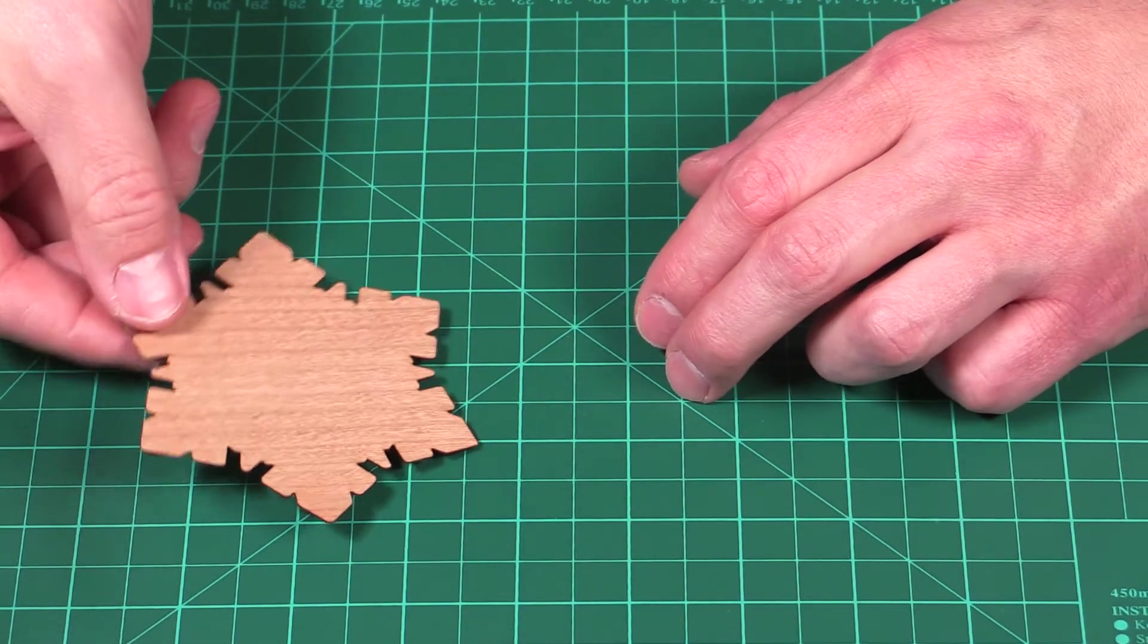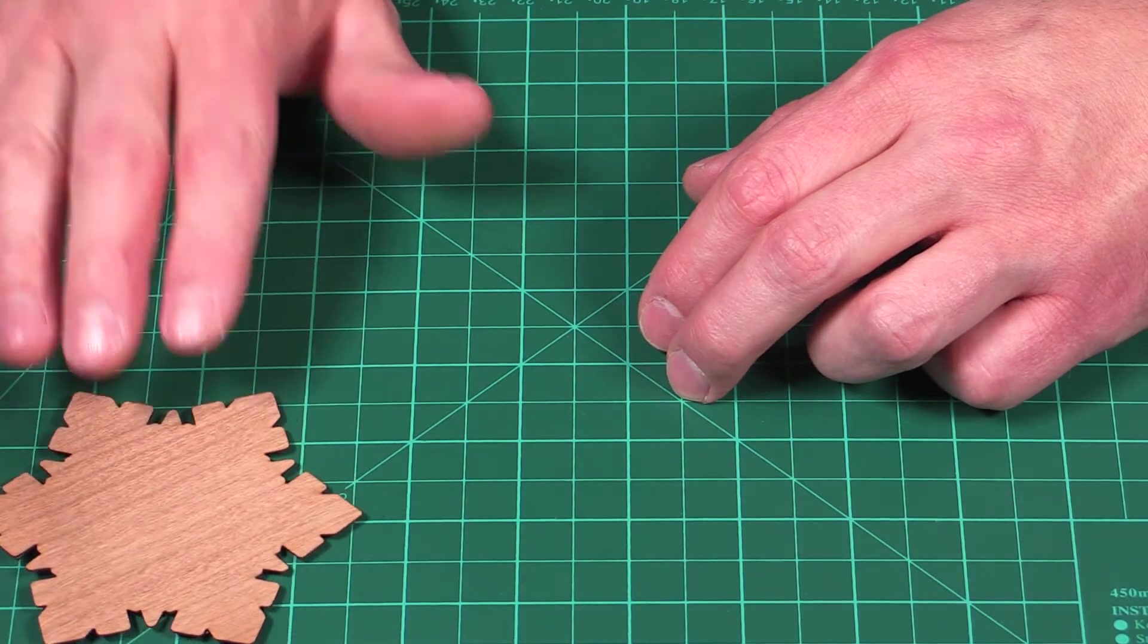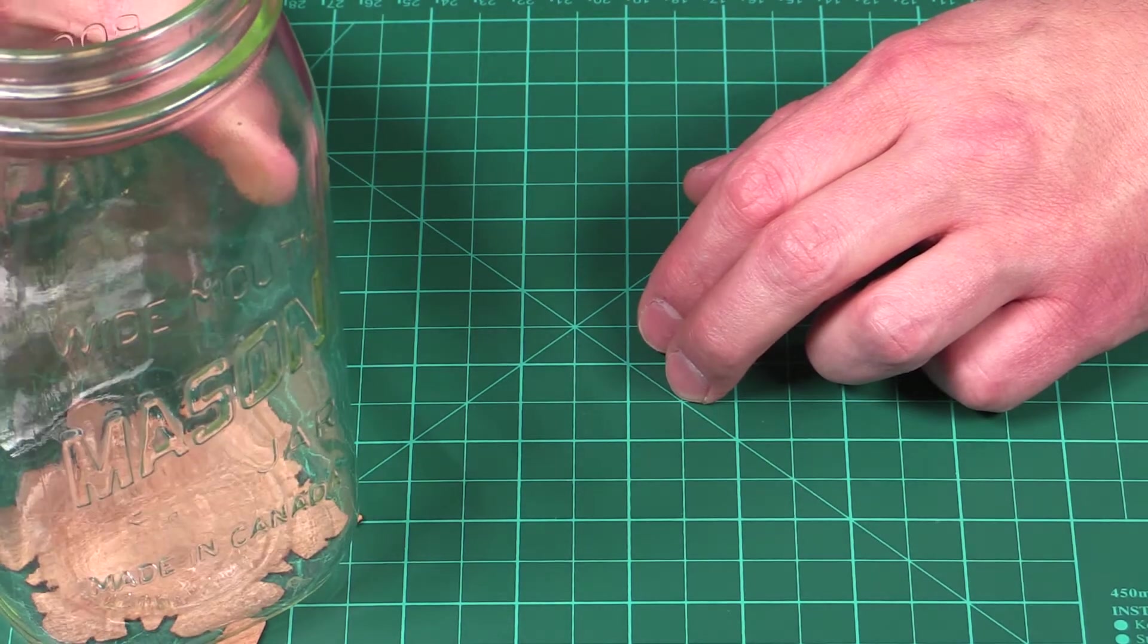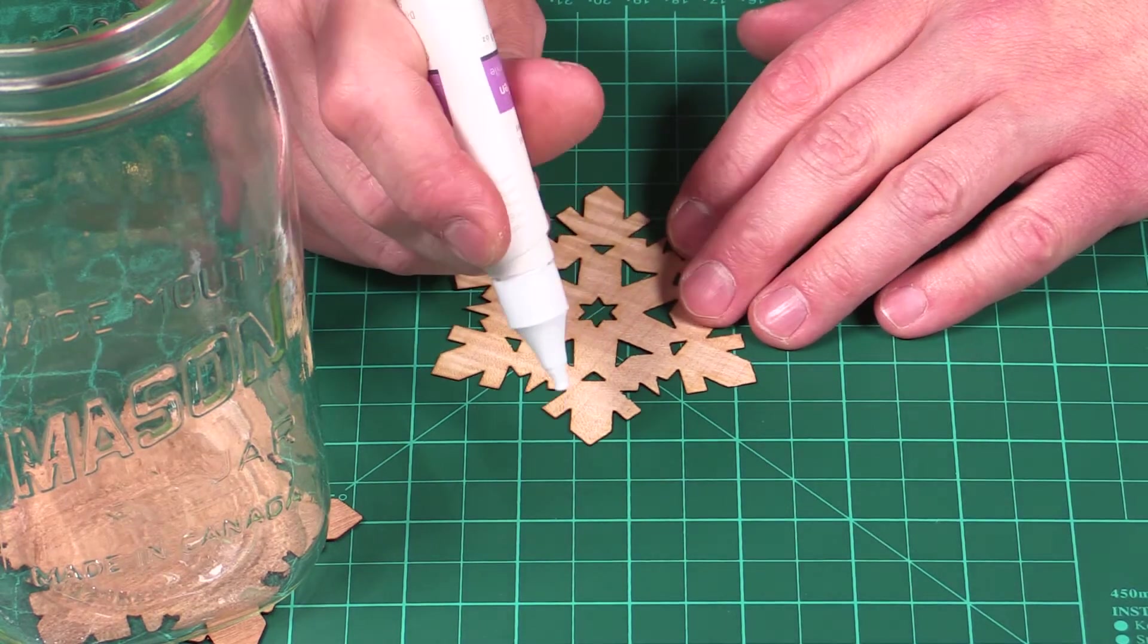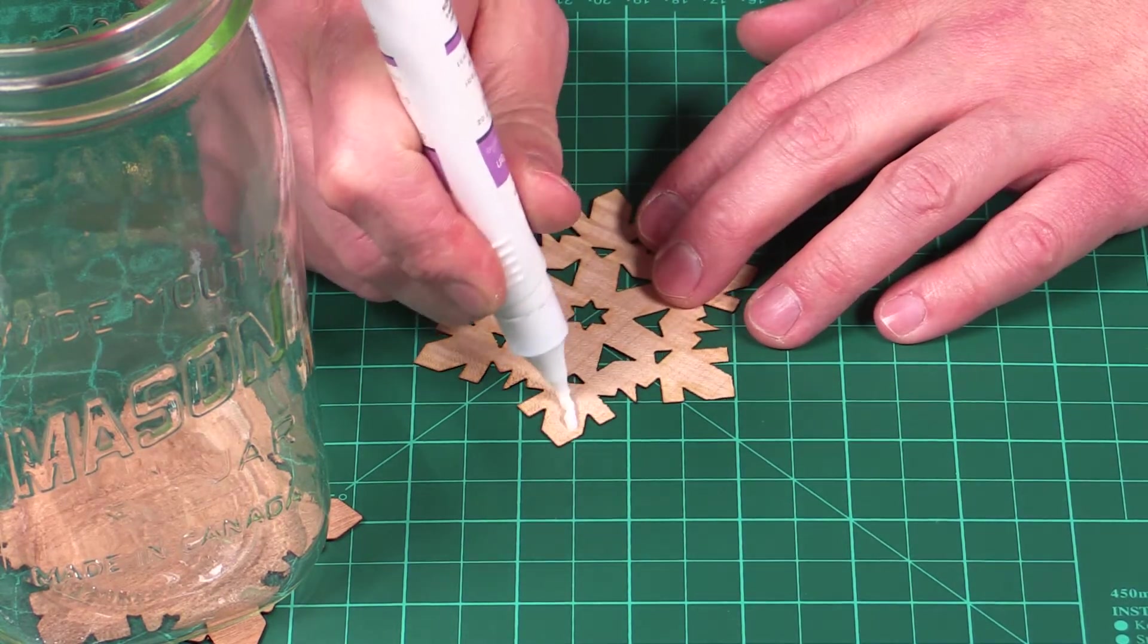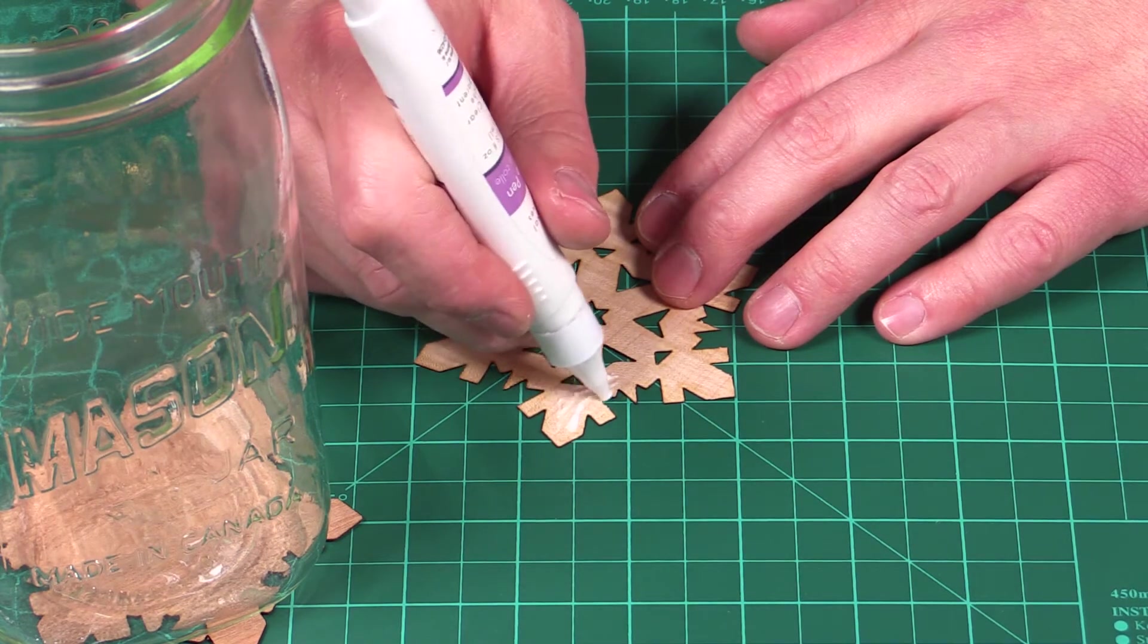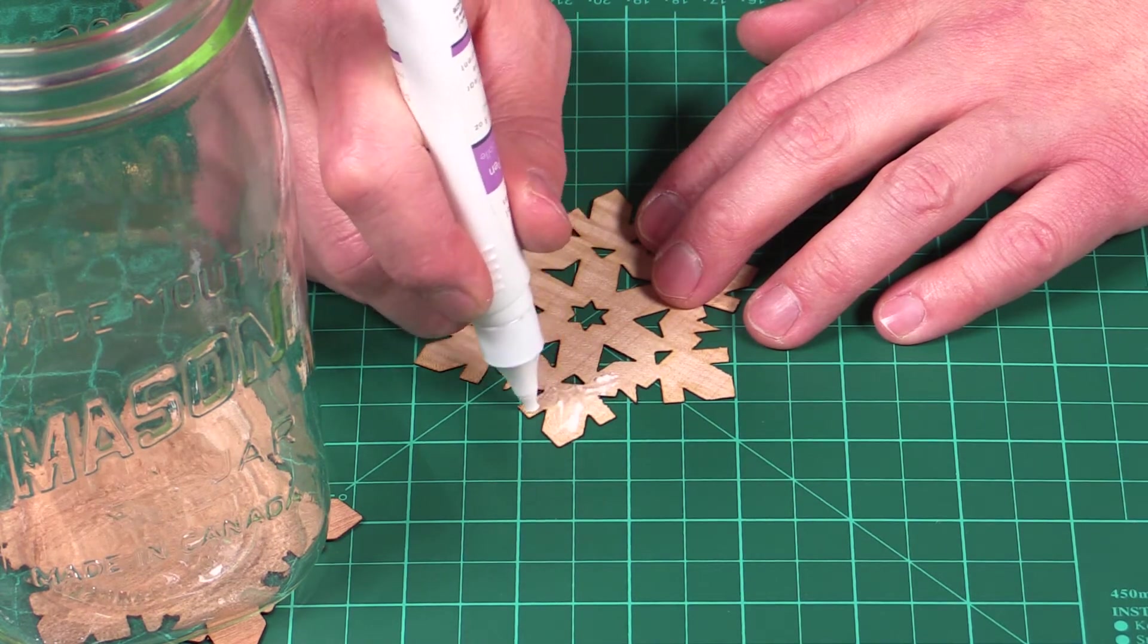Once you get it all lined up, you're going to want to put something heavy down on it to make sure it doesn't separate while you're gluing the other side. I'm gluing this side of the snowflake exactly the same way I glued the other side, simply by applying glue to all the little bits and pieces, all the little corners.